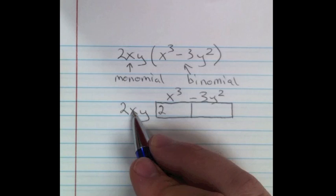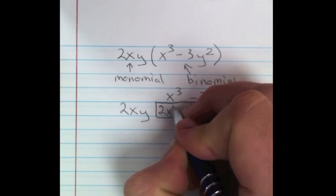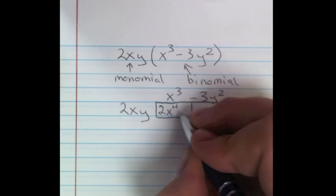So what we have here is 2 times 1—those are our coefficients—so 2 times 1 is 2. And then we know that we have x to the 4th and y.